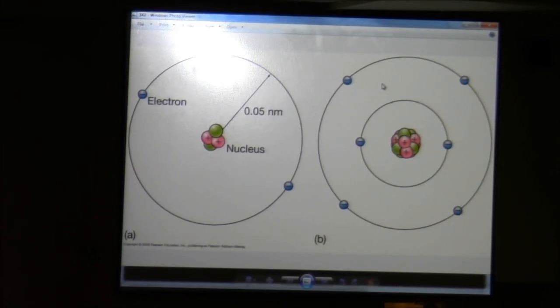With hydrogen, it's one electron. Where's it going to go? Helium, you have two. Carbon, you have six.